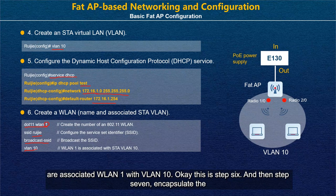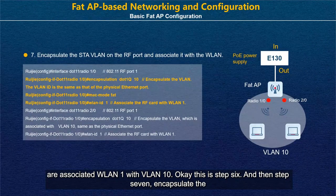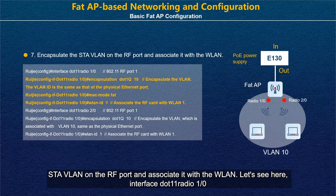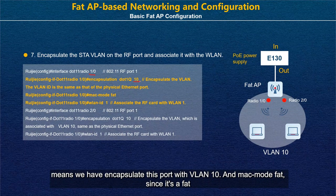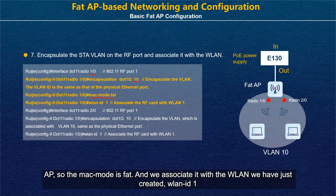Step 6 associates WLAN 1 with VLAN 10. Step 7 encapsulates the STA VLAN on the RF port and associates it with the WLAN. Enter 'interface .11 radio 1.0', then encapsulate this port with VLAN 10 using '.1Q10'. Set MAC mode to FAT since it is a FATAP, and associate it with WLAN 1.